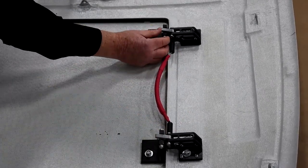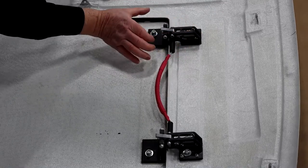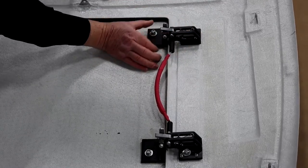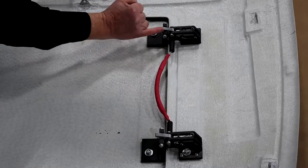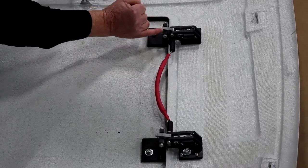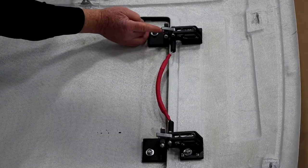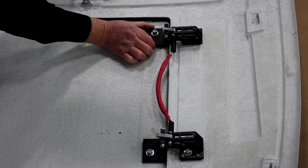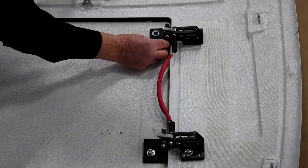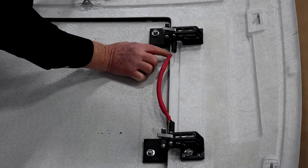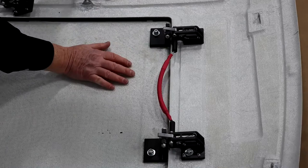To install this new one, on the striker plate you have your side to side adjustment. What you want to do is be pretty close to the center of the bar. You don't want to be rubbing on one side or the other. It should be about a sixteenth of an inch away from the lip so it does not hit when it opens.